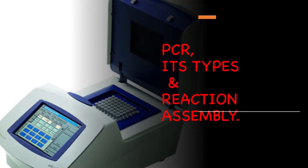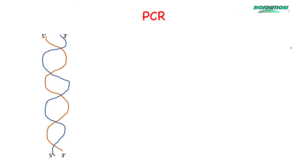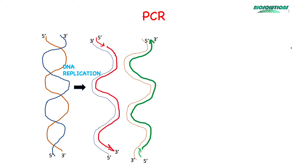Now let's learn about polymerase chain reaction or PCR and its types, and also how a typical routine PCR reaction is assembled. PCR is one of the most well-known techniques of molecular biology based on the biochemical process of replication. One fragment of DNA can be amplified into millions of fragments in a short time. This technique was given by Kary Mullis in 1983, for which he won the Nobel Prize in the year 1993, and has widespread applications in the fields of disease diagnostics, forensic investigations, research and agricultural testings.